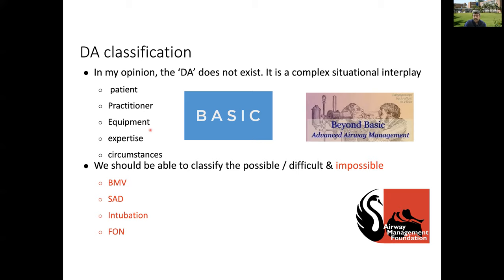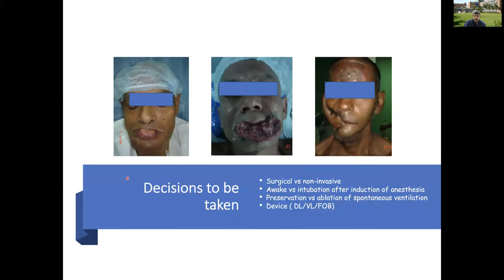The Airway Management Foundation has recently come up with guidelines using a line-of-sight approach. After assessment, the four key decisions are: whether bag-mask ventilation is easy or difficult, whether supraglottic airway is easy or difficult, whether intubation is easy or difficult, and whether front-of-neck access is easy or difficult. Broadly, the decisions to be taken are: surgical versus non-invasive technique, awake versus post-induction intubation, preservation versus abolition of spontaneous ventilation, and appropriate device selection.